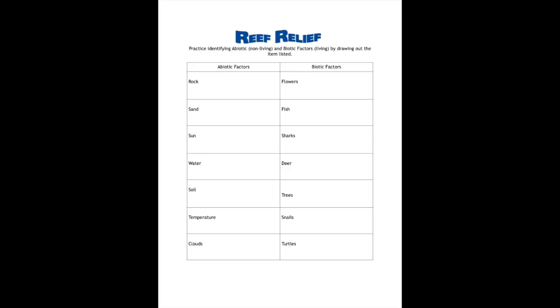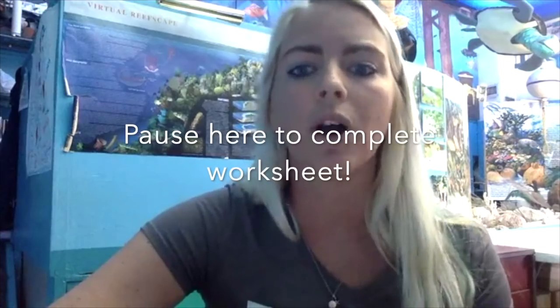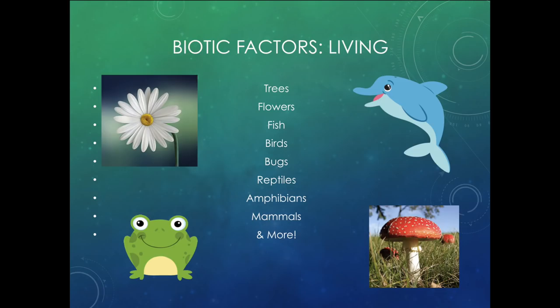That brings me to this worksheet we made for you guys, especially for the younger ones — it's a good little practice. It has the factors already on there and they can practice drawing it out. Now let's move on to biotic factors. A biotic factor is something that is living — so trees, flowers, fish, birds, bugs, reptiles, amphibians, mammals, and so much more. A biotic factor is something living in that ecosystem. Together, those abiotic and biotic factors make up an entire ecosystem.